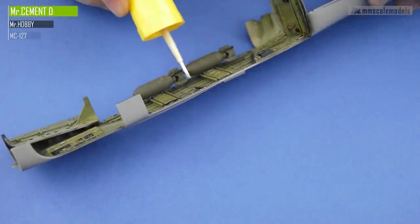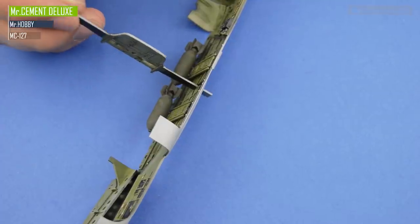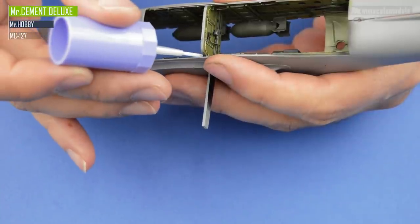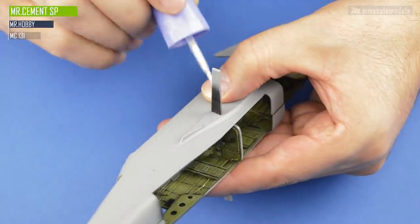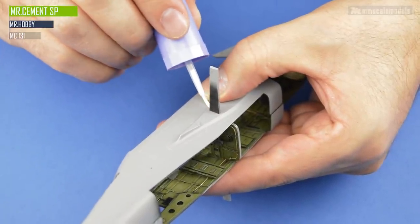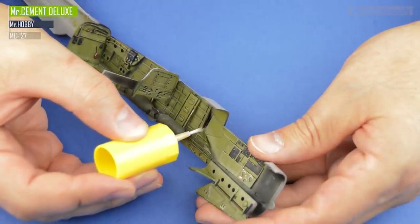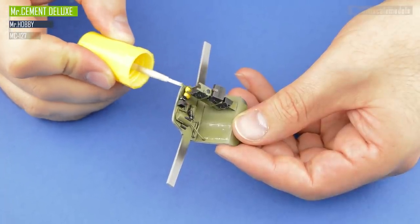Now let's move on to the bulkheads and their integration into the fuselage. Using Mr. Cement Deluxe, I cover both surfaces. After the bulkhead is in position, I will install the other fuselage half so I can get the best alignment possible. Just have to make sure not to accidentally glue the second fuselage half in.